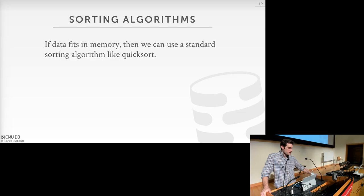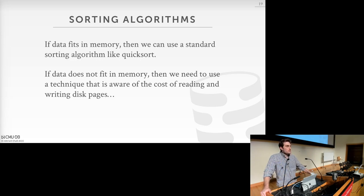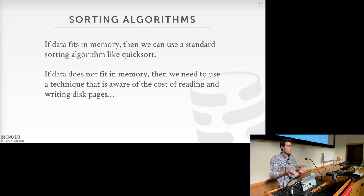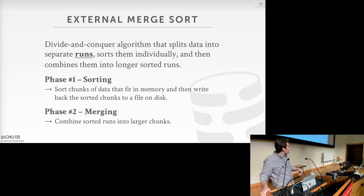If the data fits in memory, you can use any standard sorting algorithm — quicksort or any other. But if the data doesn't fit in memory, we need an algorithm that accounts for reading from and writing to disk. We need to know how much working memory we have in the buffer pool and write pages out intelligently when it fills up. That's the idea behind external merge sort.